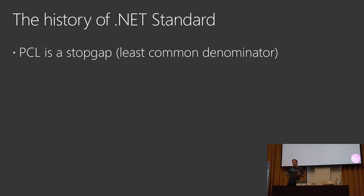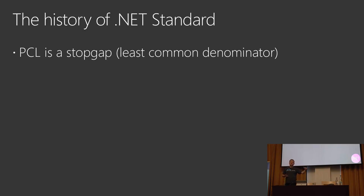What I mean with that is that let's say if you start with a .NET project and you add Windows 10, for example, and then you start developing — that's cool. But then suddenly you decide to add Xamarin to the mix, and so you have a subset of APIs, and it's possible that suddenly your code doesn't build anymore, because you have used an API which was available in full .NET and in UWP but not in Xamarin.